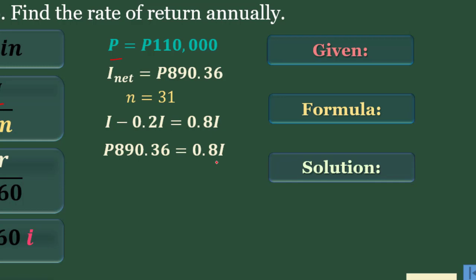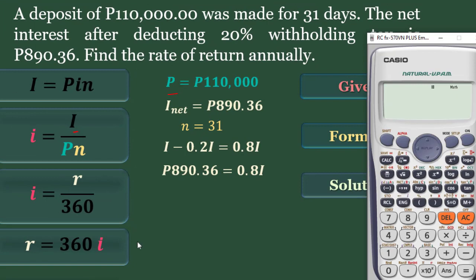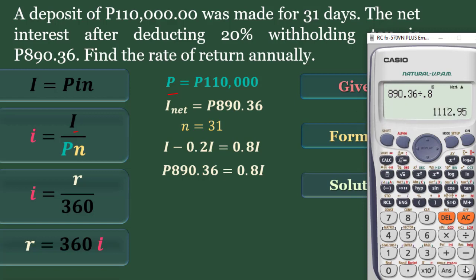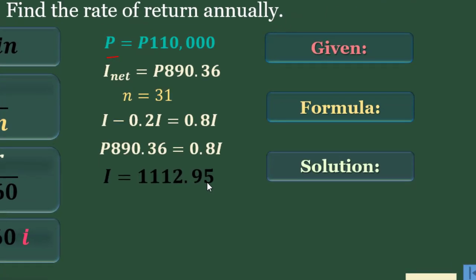To get I, simply divide 890.36 by 0.8, which gives us 1112.95. So 1112.95 is the gross interest earned. The net is 890.36 and the gross is 1112.95 — that is your interest.